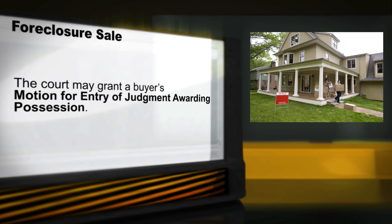After the court approves the sale, the purchaser of your house can file a motion for entry of judgment awarding possession. If the court grants this motion, the new purchaser will have legal possession of the house. The purchaser must also send you an eviction notice. The new owner may also file a request for writ of possession. Once the new owner has filed those documents with the court, a sheriff will schedule a time for the eviction.